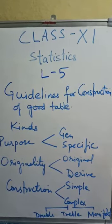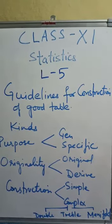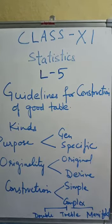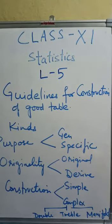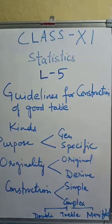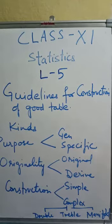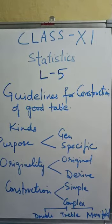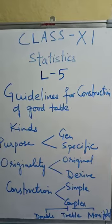Now, tables according to originality. An original table is one in which data are presented in the same form and manner in which they were collected. No changes are made. In the other type, data are first converted into ratios or percentages, then represented.